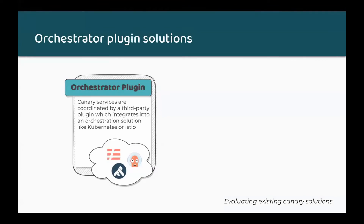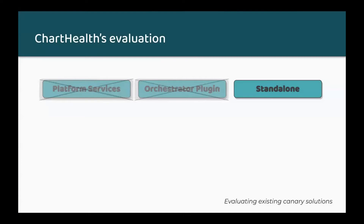Orchestrator plug-ins are another category. They work with control plane products or orchestration products like Kubernetes or Istio. Because they're using these control plane products, the canary deployments that can be achieved are rather primitive, limited by whatever features the control plane products may have. The major benefit is that configuring, deploying, and observing deployments is nearly effortless. The major downside is that a control plane or orchestration solution must be implemented and used to coordinate the entire production environment. The development team decides against orchestrator plug-in solutions because their architecture isn't complex enough to justify a control plane or orchestrator solution.